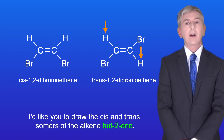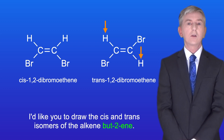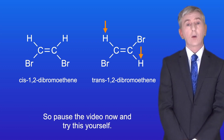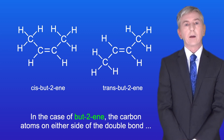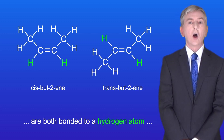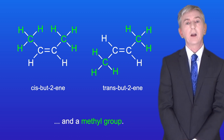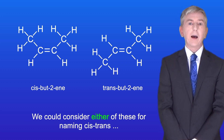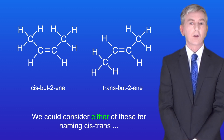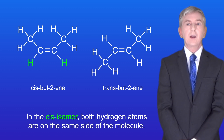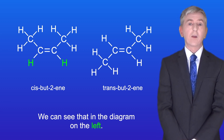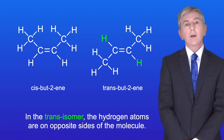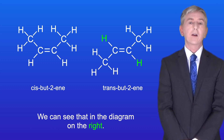I'd like you to draw the cis and trans isomers of the alkene but-2-ene, so pause the video now and try this yourself. In the case of but-2-ene, the carbon atoms on either side of the double bond are both bonded to a hydrogen atom and a methyl group. In the cis isomer both hydrogen atoms are on the same side of the molecule, as seen in the diagram on the left. In the trans isomer the hydrogen atoms are on opposite sides of the molecule, as seen in the diagram on the right.